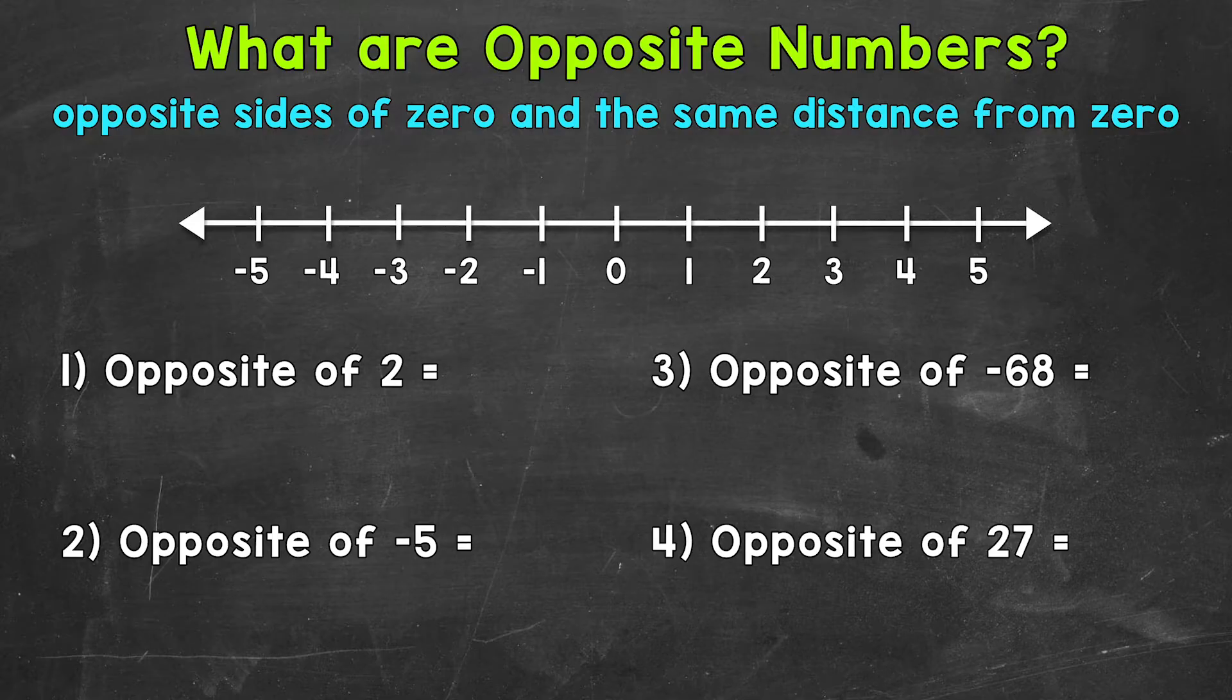Simply put, opposite numbers are the same number, but have the opposite signs. Let's jump into our examples and see exactly what all this means.